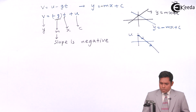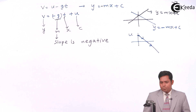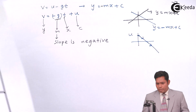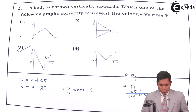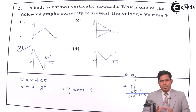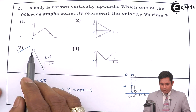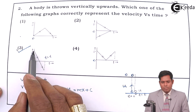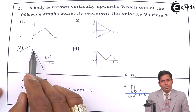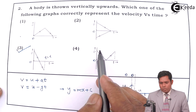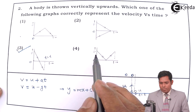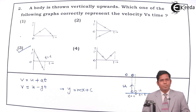Now let me explain this in another way. Initially the velocity is positive. Suppose I throw it at a certain velocity, say 10 meters per second. So at time t equals zero, the velocity is 10 and it's positive. The graph should start from the positive side. This is also possible — I'll start from here, because these three options are possible from positive velocity.